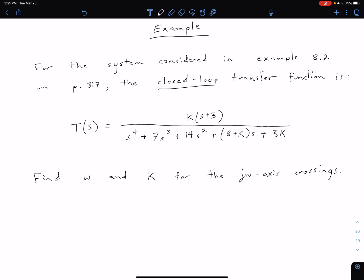We're going to come back and take a look at that system a little later. What we're going to focus on is our closed-loop transfer function, which is given by this T(s) expression below. We have K times s plus 3 in the numerator, and in the denominator we have s to the fourth plus 7s cubed plus 14s squared plus the quantity of 8 plus K times s plus 3 times K.